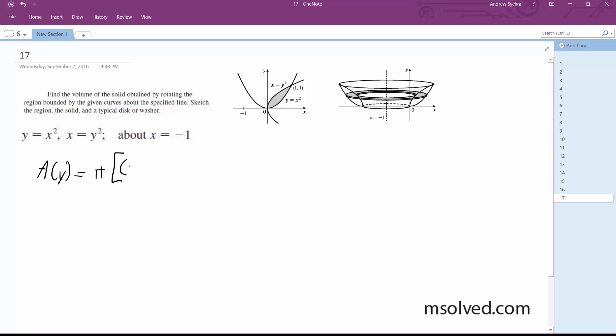So the radius it's going to be (1 + √y)² minus (1 + y²)². Simplify this out.